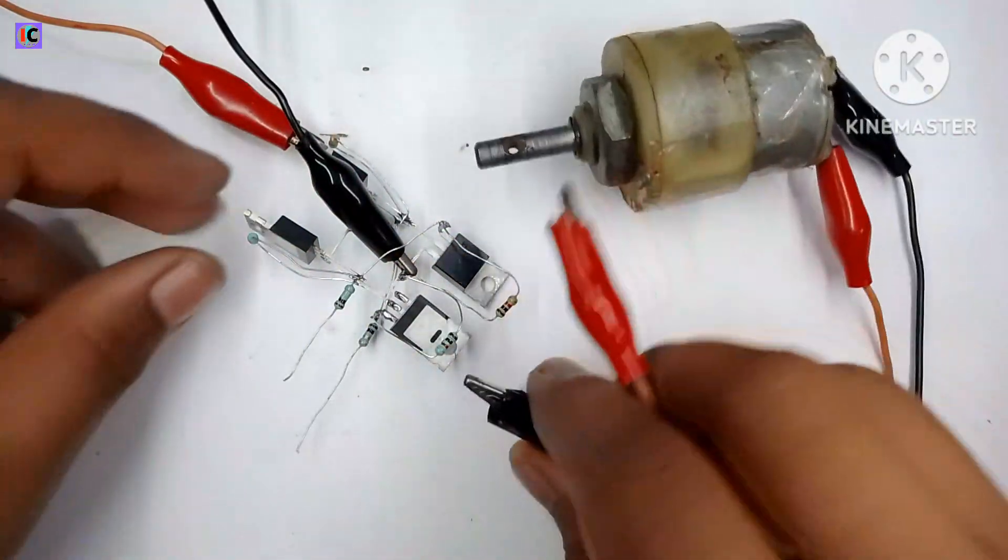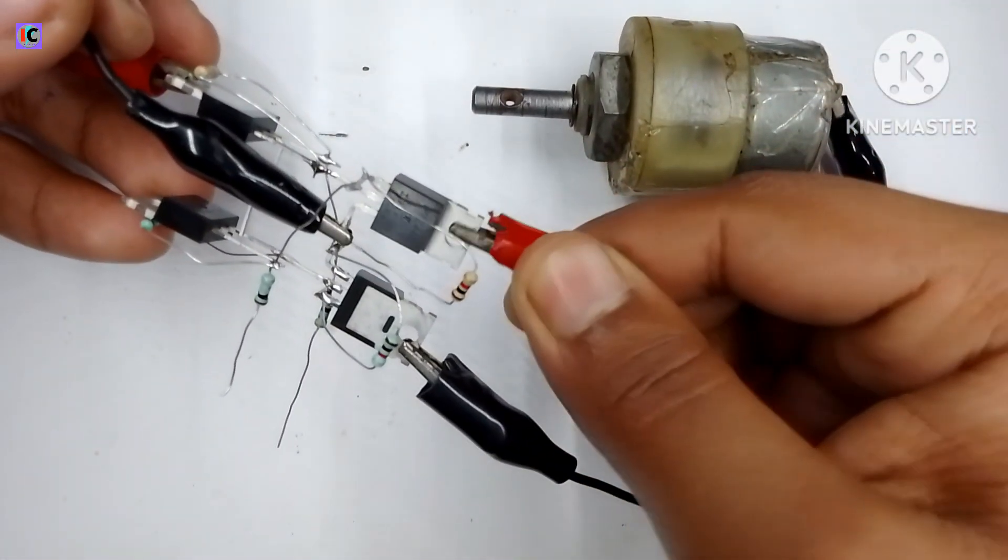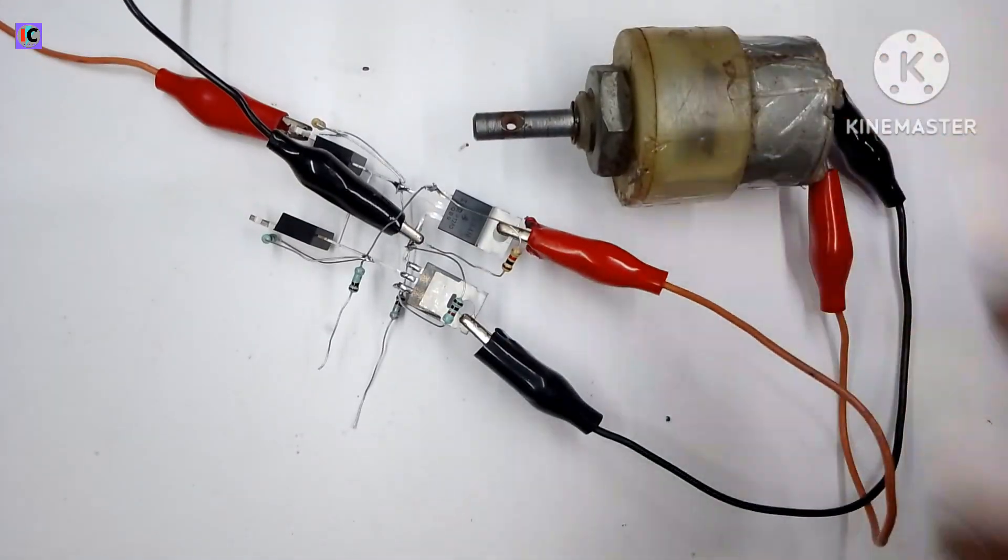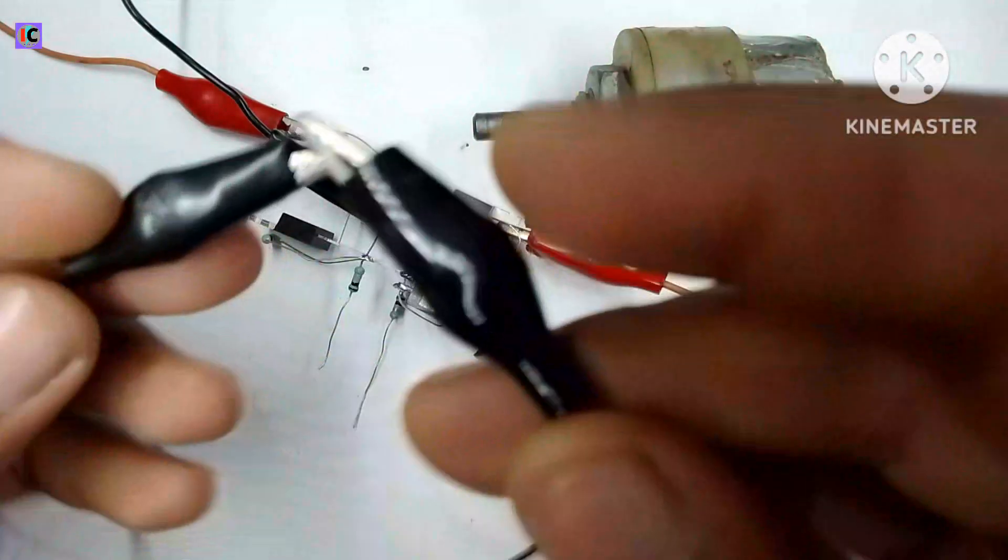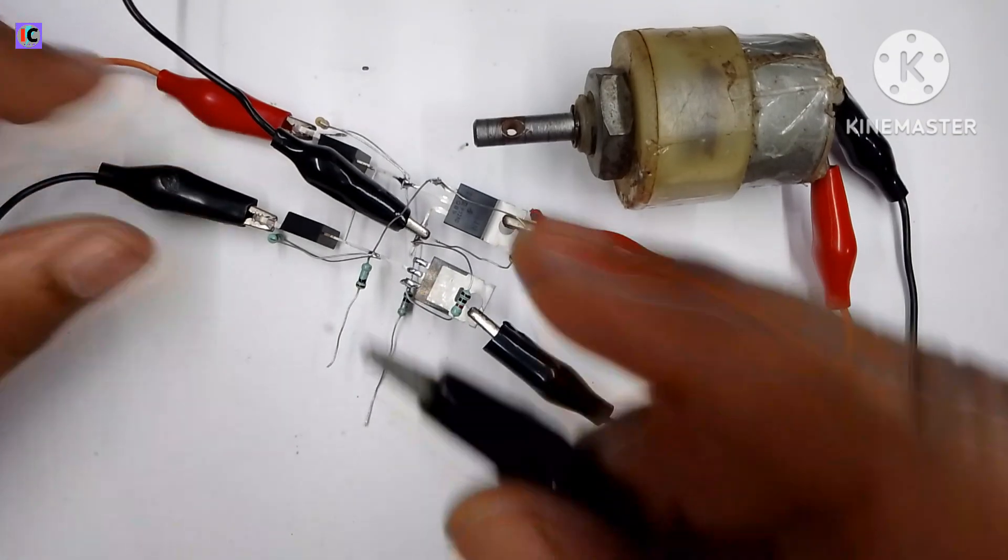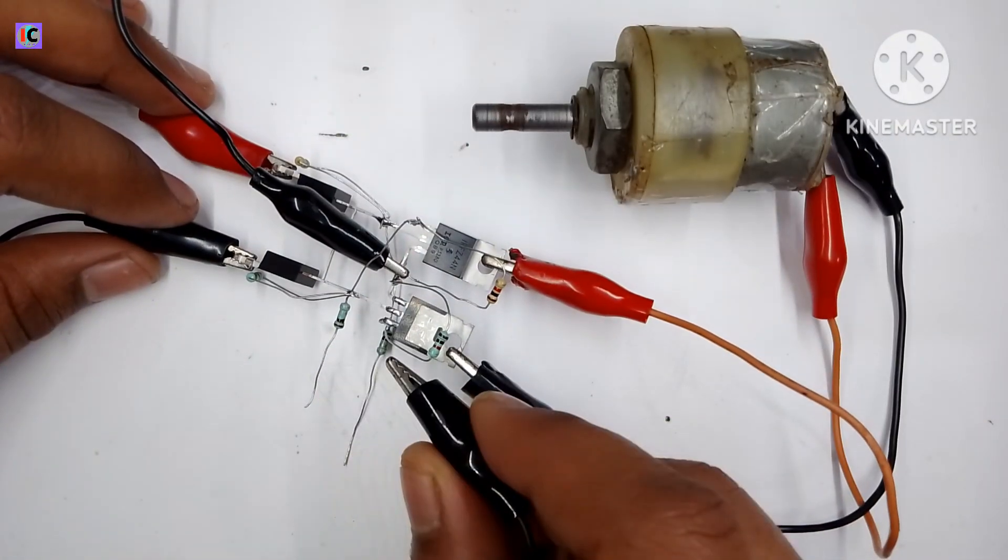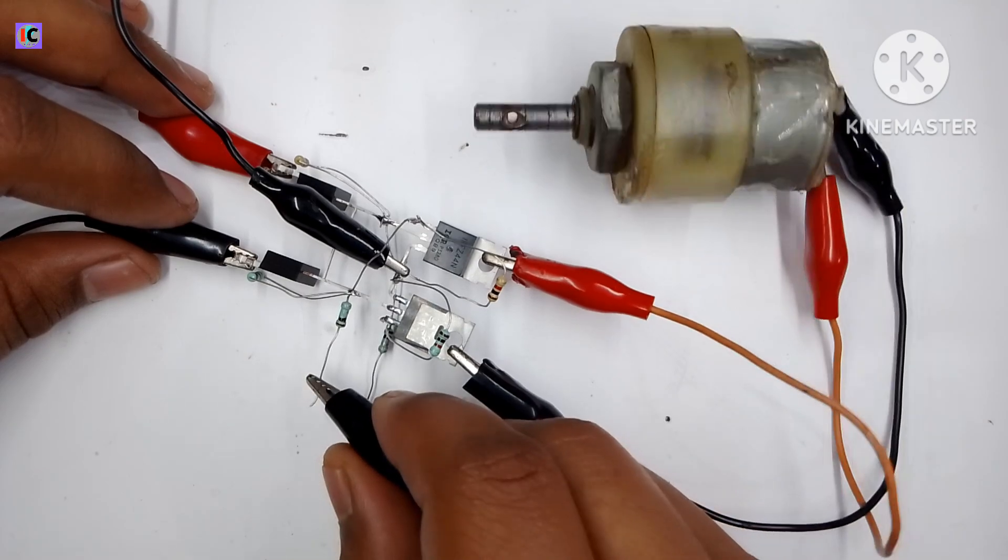For testing the output, I am connecting a 12 volt geared motor at the joints of the source and drain pins, which is the output of this H-bridge. Here you can see I am connecting a clip of wire which is connected to the positive input.